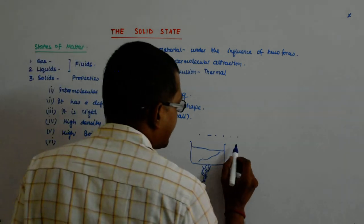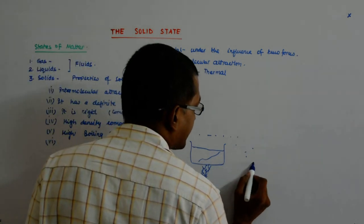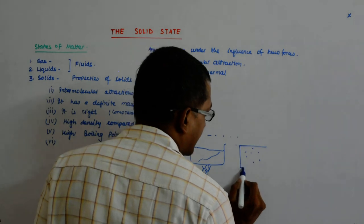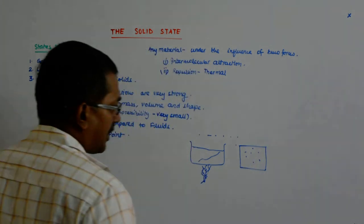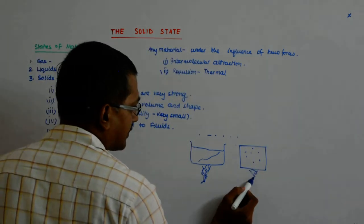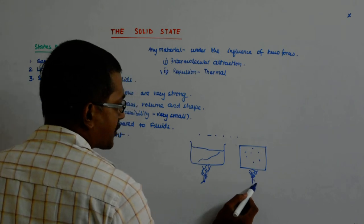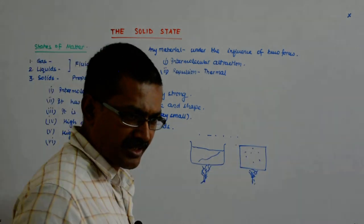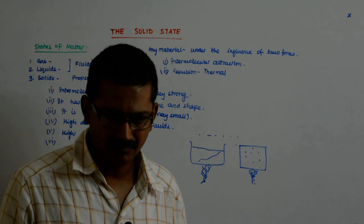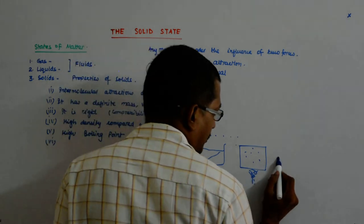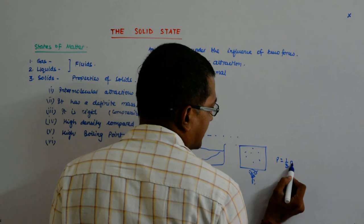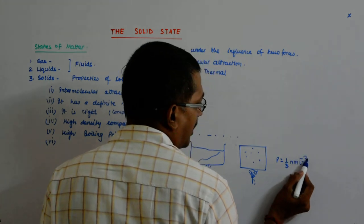In a gas, if there is a container that contains gas, then you must have studied in class 11th. What happens? The pressure is due to the velocity at which they strike the walls. Do you remember that? P equals 1 by 3 n m v bar square.